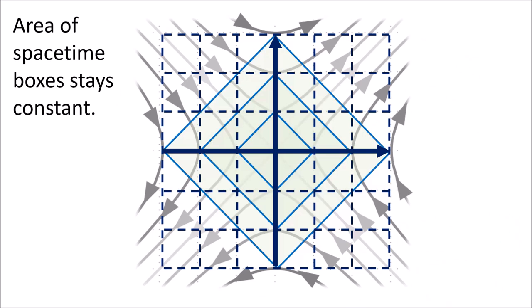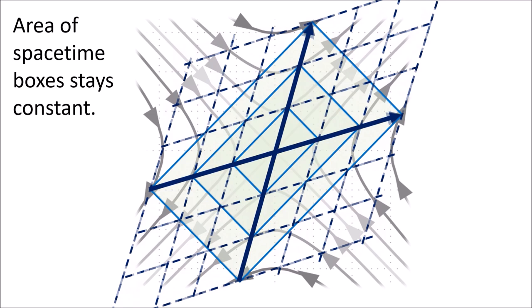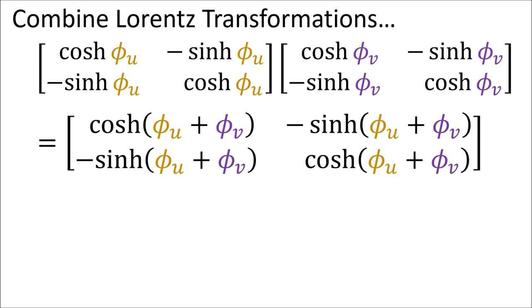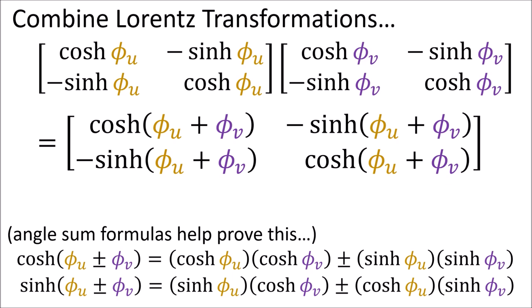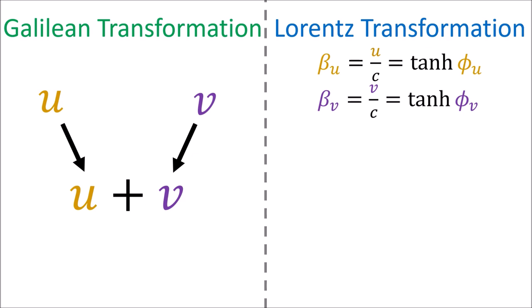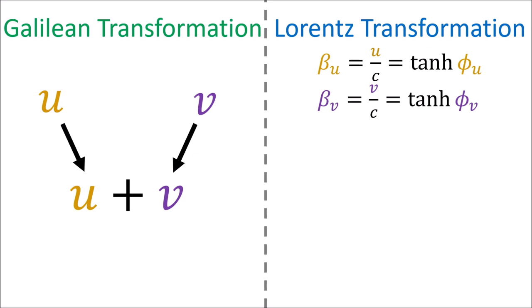Hyperbolic rotations are just a different name for Lorentz transformations. If we define cosh phi to equal the gamma coefficient, we can show that beta equals sinh phi over cosh phi — which is the hyperbolic tangent — and gamma times beta equals sinh phi. So a Lorentz matrix is simply a hyperbolic rotation written differently. A Lorentz transformation compresses spacetime coordinates in one diagonal direction and expands them in the other, keeping box area constant. When combining two Lorentz transformations, we simply add their hyperbolic angles, rather than adding velocities as in Galilean relativity.